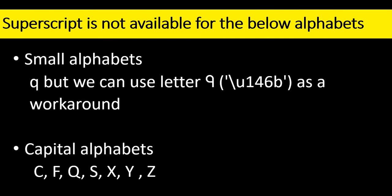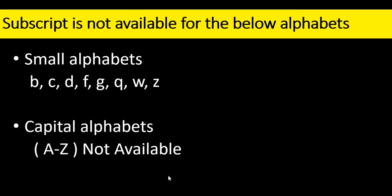Before starting - superscript is not available for certain small alphabets like Q, and for a workaround we can use a symbol with unicode U146P. For capital letters, it's not available for C, F, Q, S, X, Y, Z. Similarly, subscript is not available for the letters B, C, D, F, G, Q, W, Z.